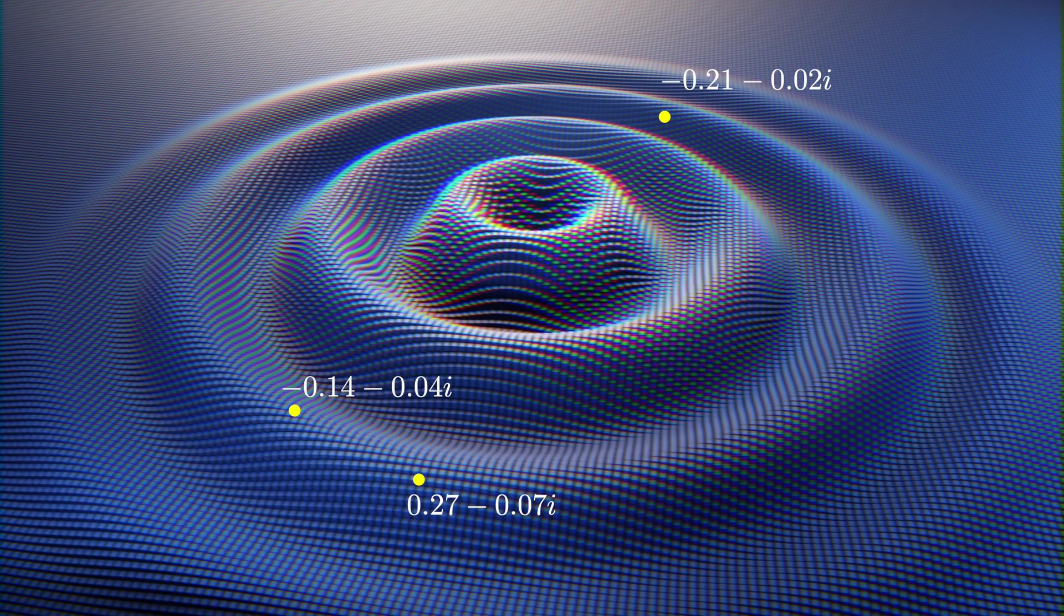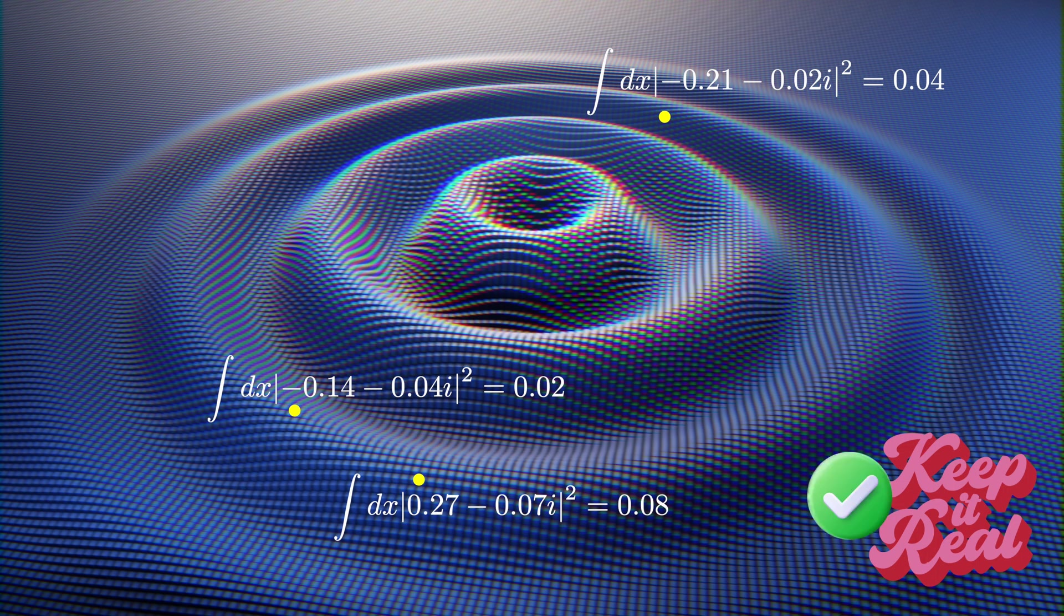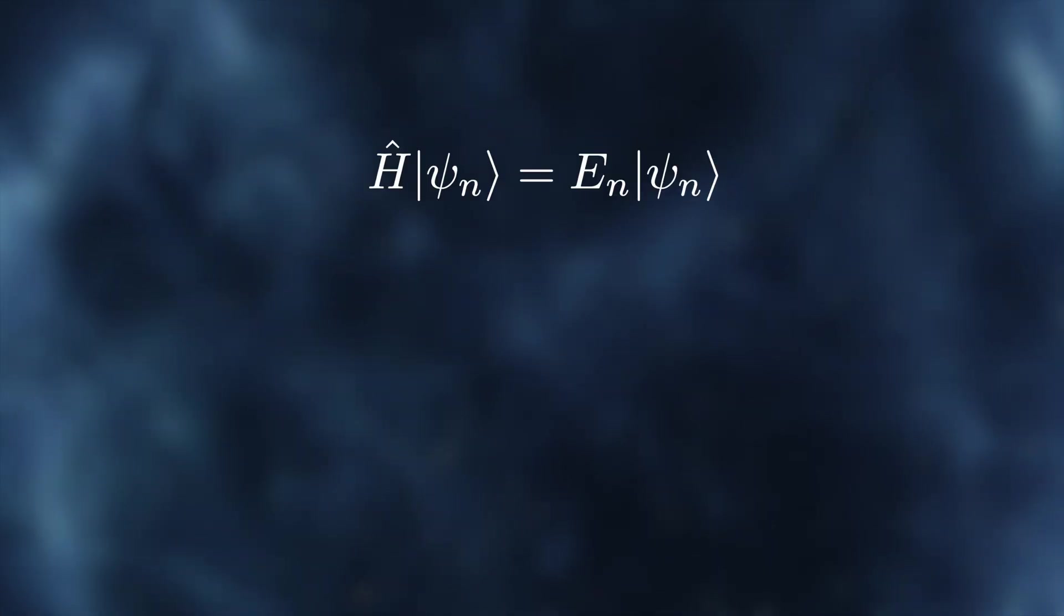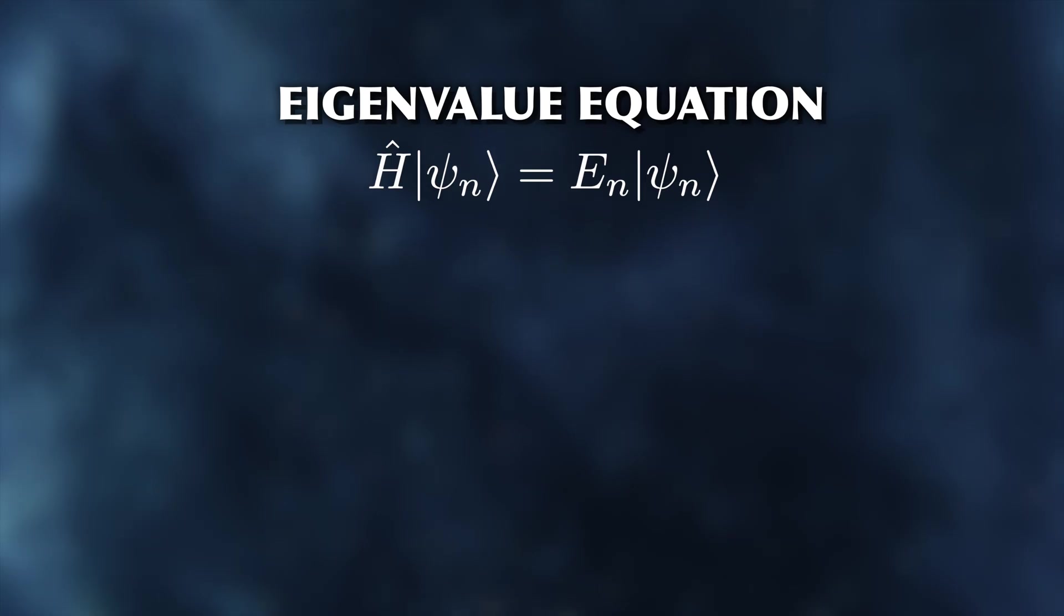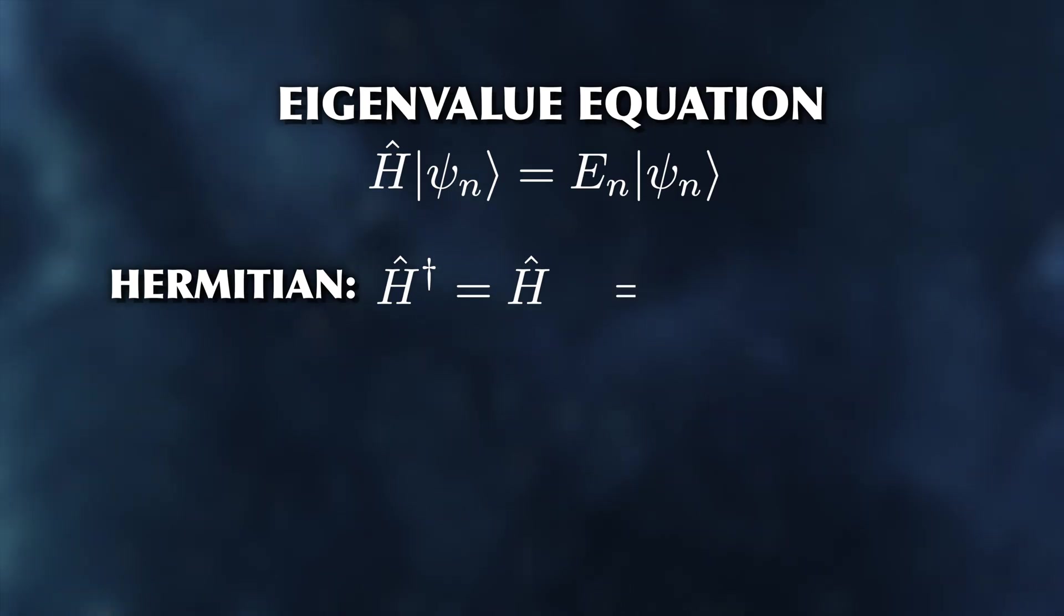Of course, it is still true what I said earlier: complex numbers do not exist in the sense that we can never measure them. So whenever quantum mechanics comes into contact with the real world, there needs to be some mechanism that only produces real numbers. For example, while the wave function outputs complex numbers, to calculate probabilities from those, we need to take the norm square of the wave function, which will always be a real number between zero and one. To get measurement outcomes in quantum mechanics, you need to calculate the eigenvalues of linear operators. And since any such operators have a special property called being Hermitian, they automatically only ever produce real numbers.